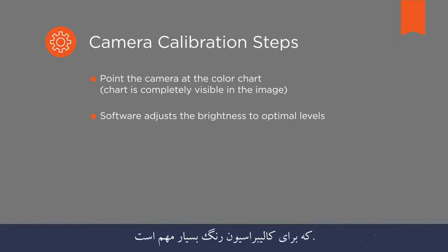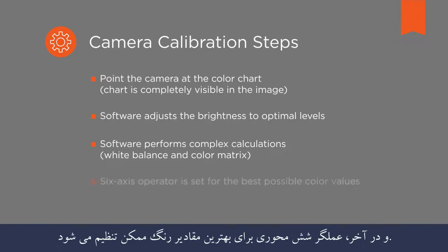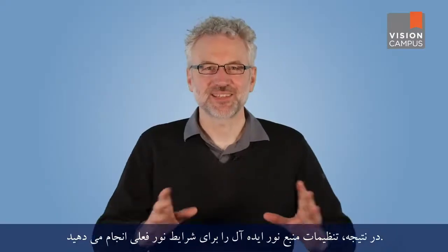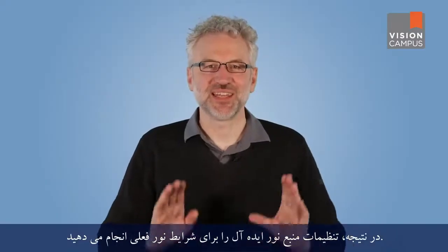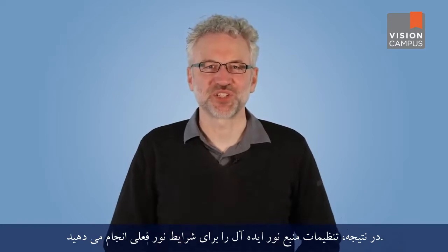This is extremely important for color calibration. In the next step, the software performs complex calculations such as white balance and optimizing the color matrix. As a finishing touch, the six-axis operator is set for the best possible color values. As a result, you get the ideal light source preset for the present light conditions.